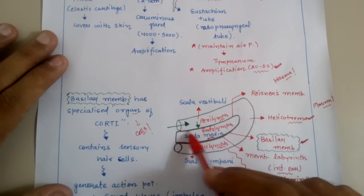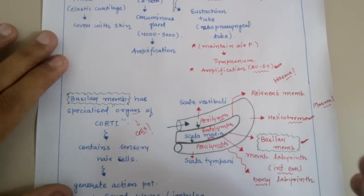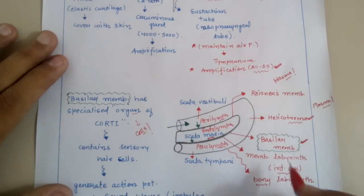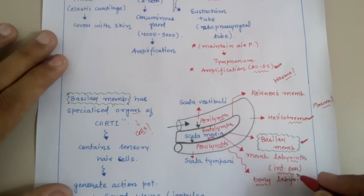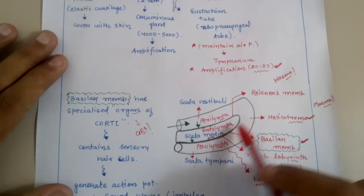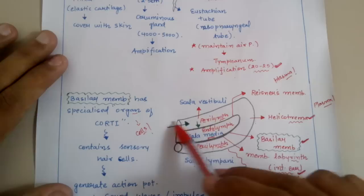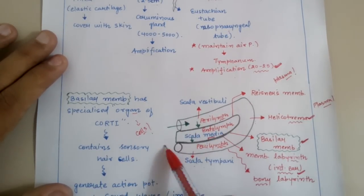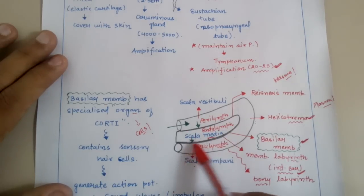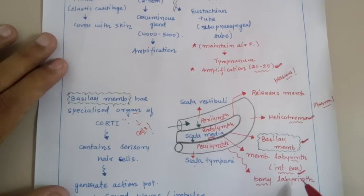This portion is surrounded by a membrane — the endolymph is surrounded by membrane — and that particular membrane is known as the membranous labyrinth. Therefore this region is known as the membranous labyrinth, and we can call the internal ear the membranous labyrinth. It is outermostly covered by a bony labyrinth. So the outer structure is known as the bony labyrinth, and the inner one is known as the membranous labyrinth, which is also called the internal ear.